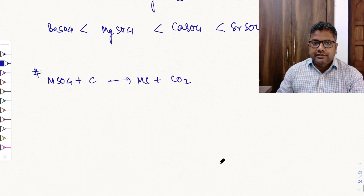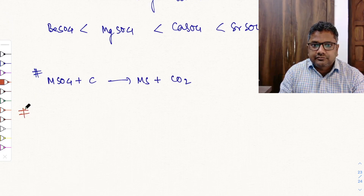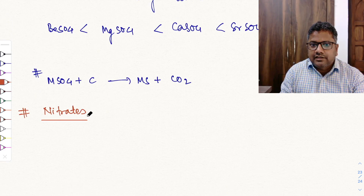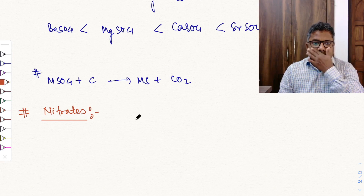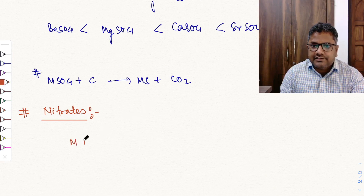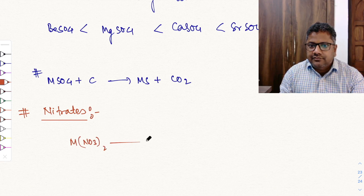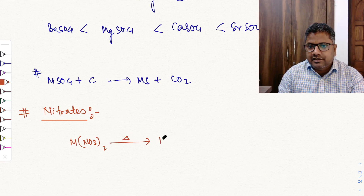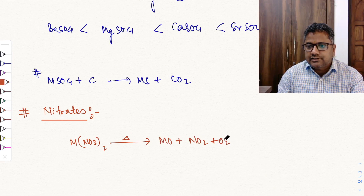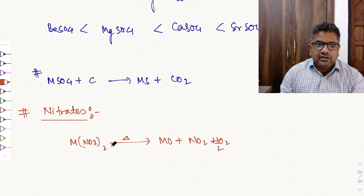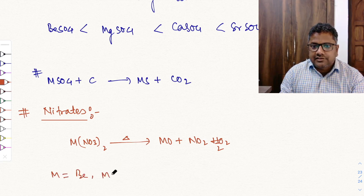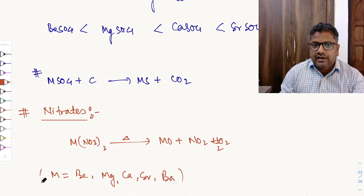All group 2 metal nitrates are soluble. On heating, metal nitrates M(NO3)2 decompose to give metal oxide + NO2 + ½O2. This reaction applies to all group 2 elements — beryllium, magnesium, calcium, strontium, and barium.